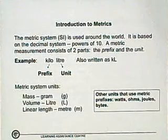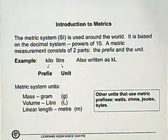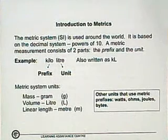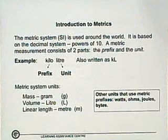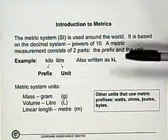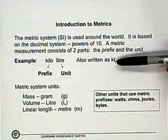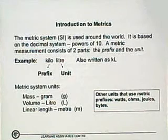The metric system, or SI, is used all around the world. It's based on the decimal system, which means powers of ten. A metric measurement consists of two parts: the prefix and the unit. An example is the kiloliter. Kilo is the prefix, which means a thousand. Liter is the unit, which is the measure of volume. That particular measurement can also be written as kL - small k, capital L. We use a capital L rather than a small l so that it doesn't get confused with the number one.